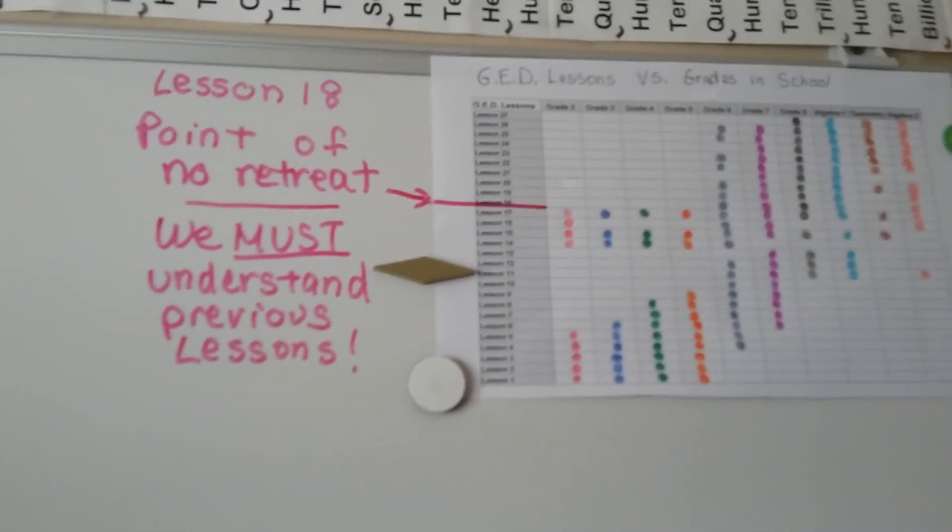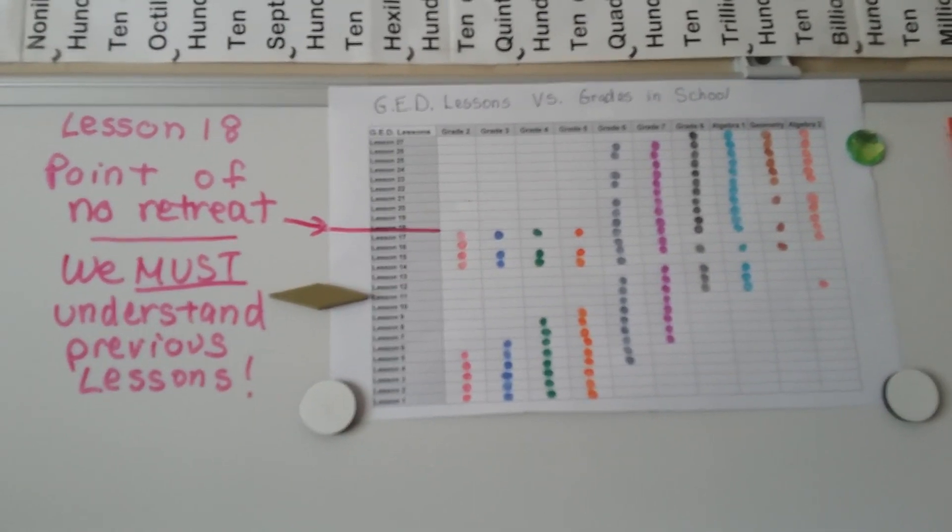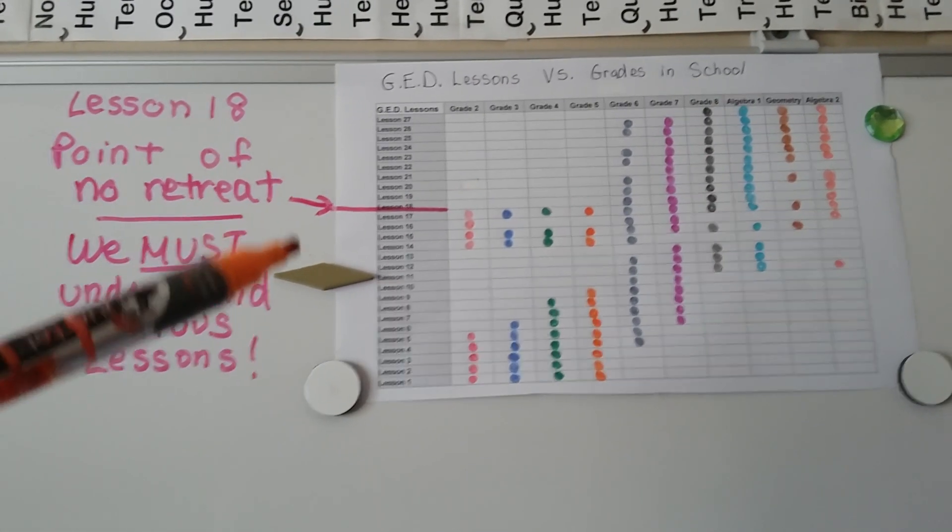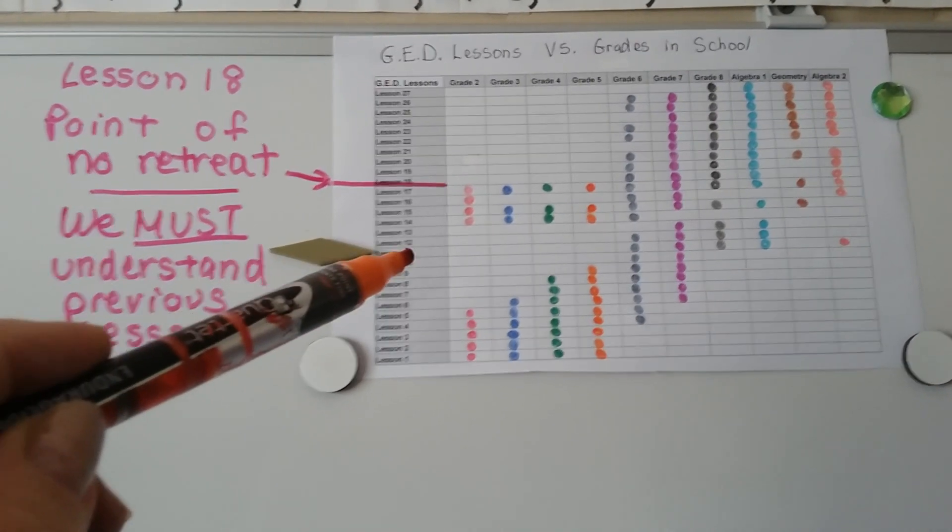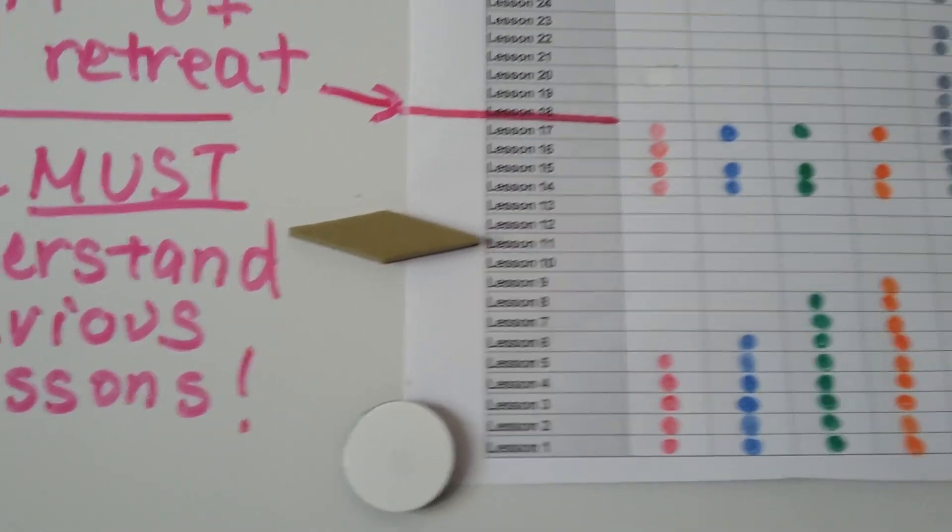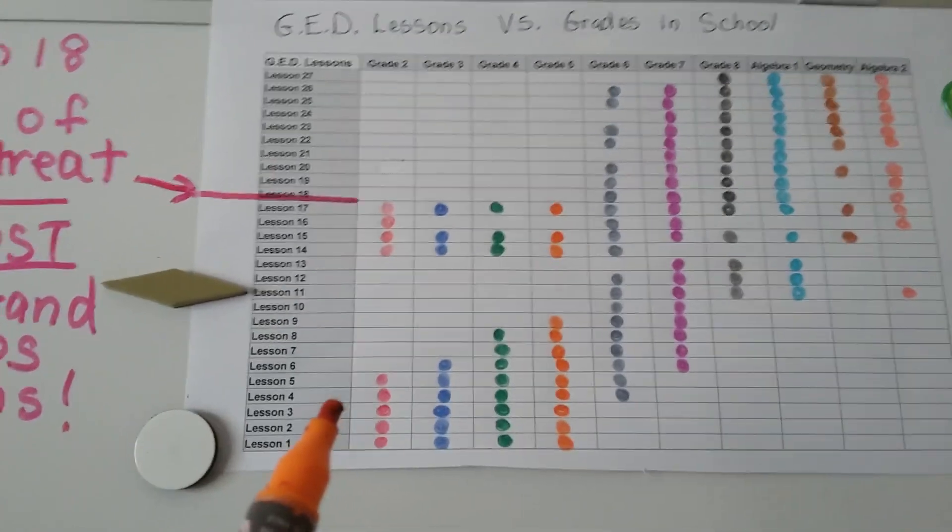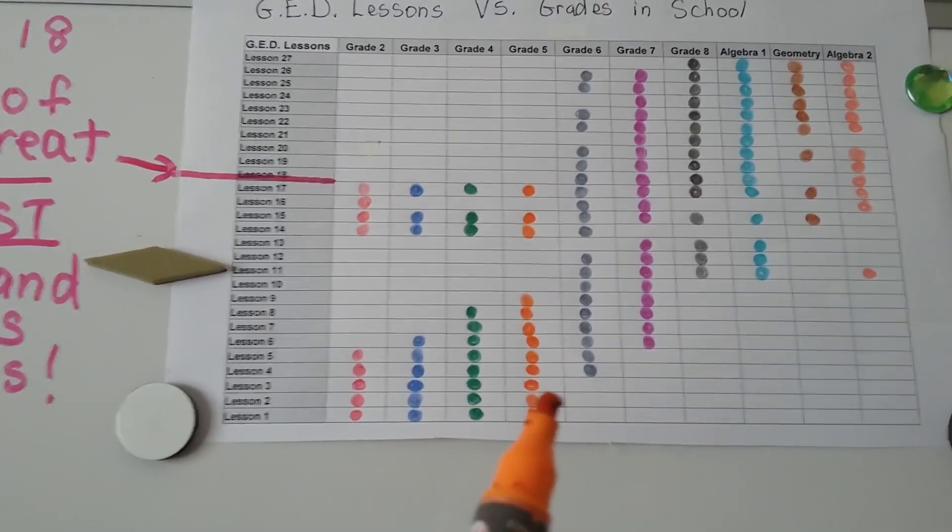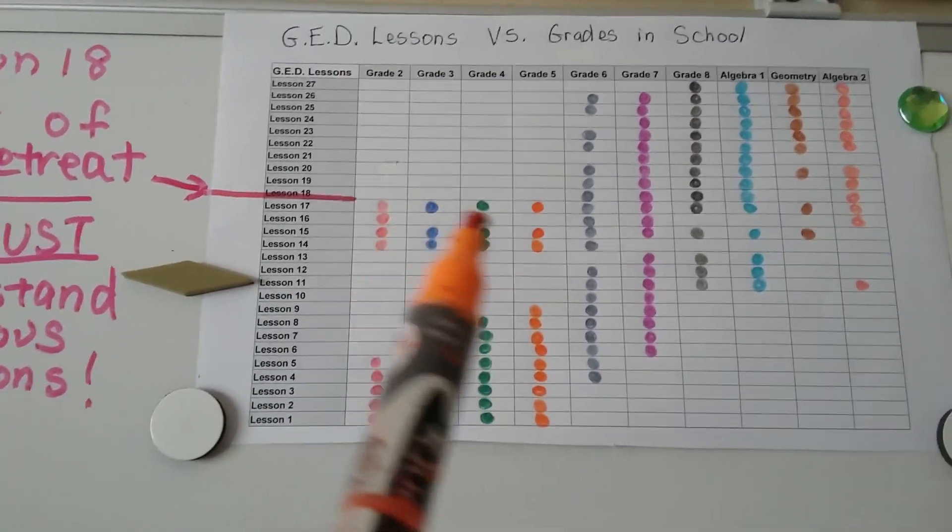So the other thing I wanted to show you is where we're at compared to the grade school, middle school, and high school chart. Right now, we're where this gold diamond is. We're at lesson 11. We're right at lesson 11 where it's pointing. And if you look, here's the different grade levels. We have grade 2, 3, 4, and 5.